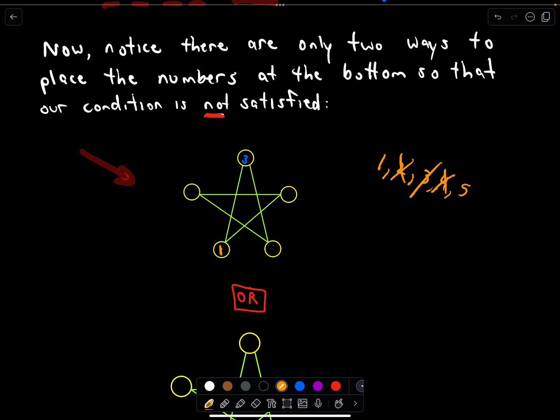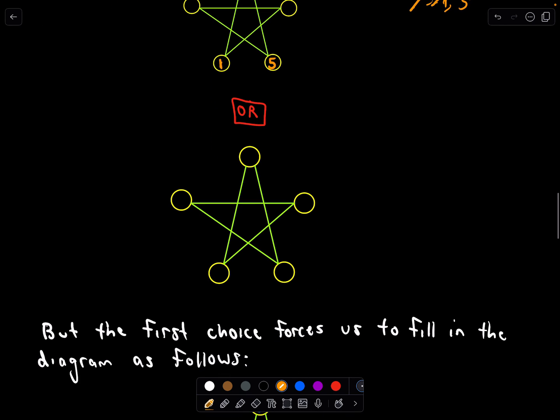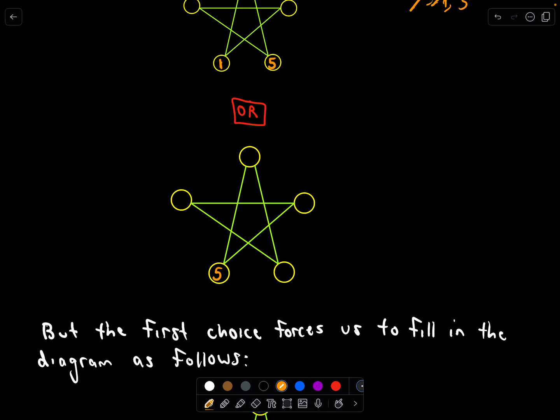Well, that tells me that either I've got to put a 1 and the 5 at the bottom. The only way to do that is to put the 1 in the bottom left and the 5 in the bottom right, or to put the 5 in the bottom left and the 1 in the bottom right. And again, this is assuming that our 3 is here at the top.